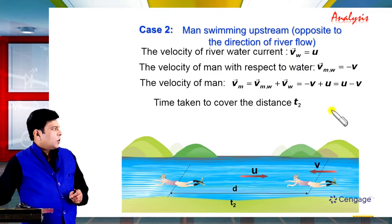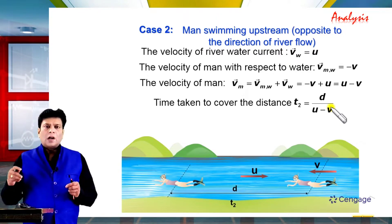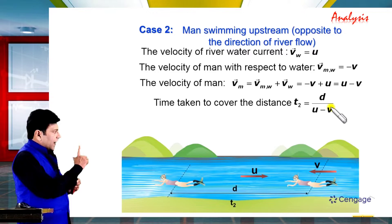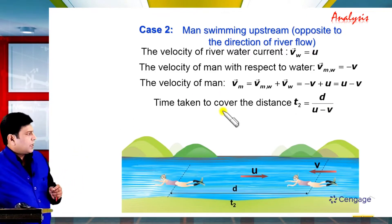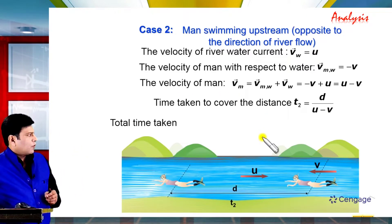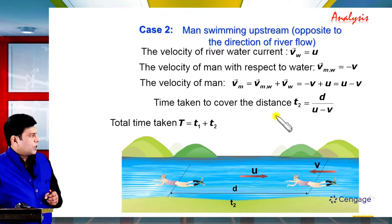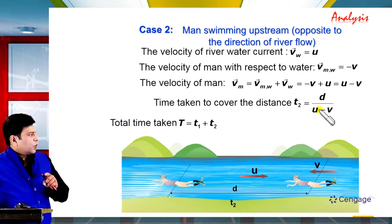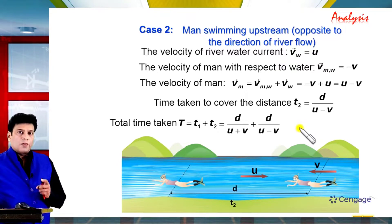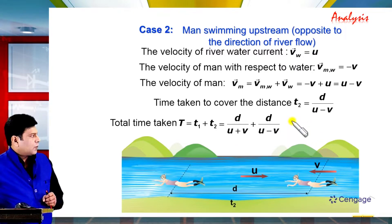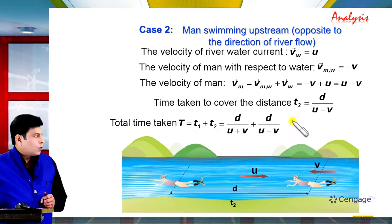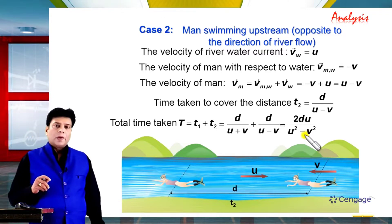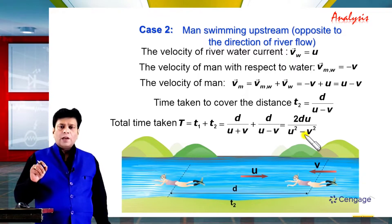Now we calculate the total time. Total time T equals T1 plus T2. Substituting: T1 equals D divided by (U plus V) and T2 equals D divided by (U minus V). Solving and simplifying, we finally get the total time T equals 2DU divided by (U squared minus V squared). This is the total time taken for the complete journey.